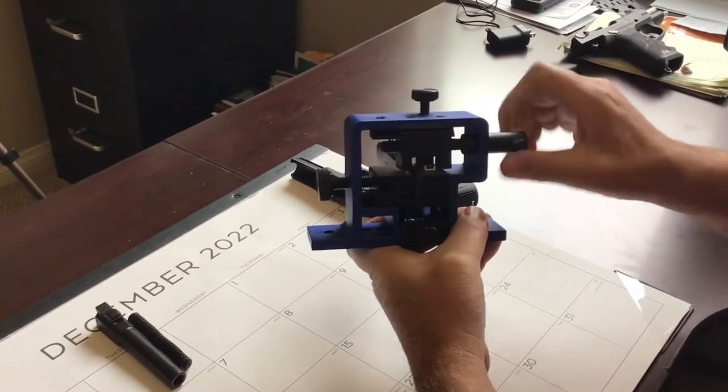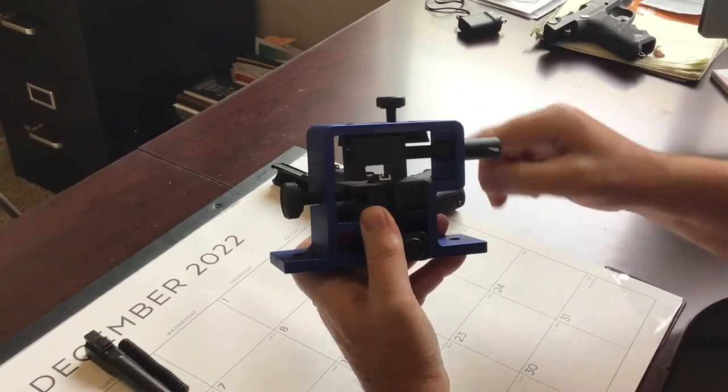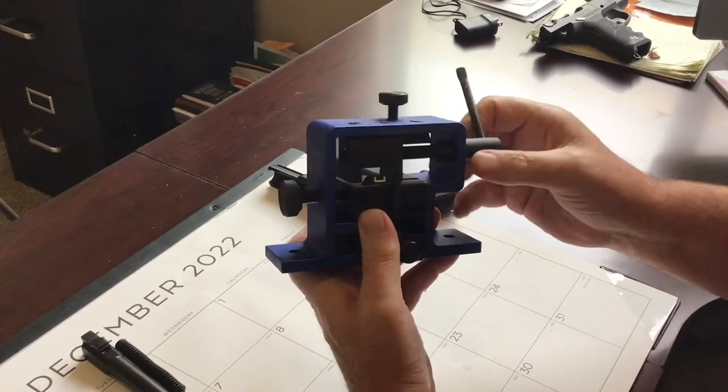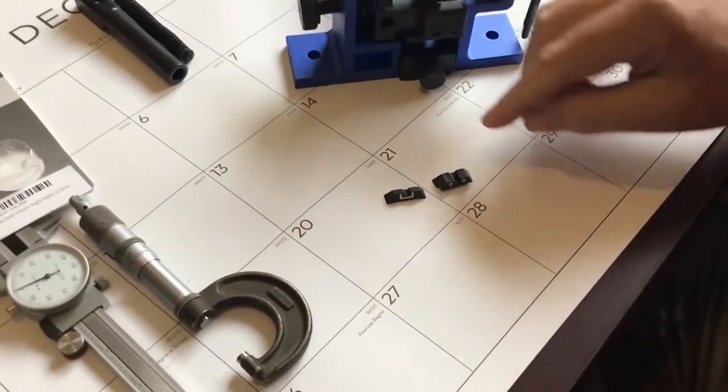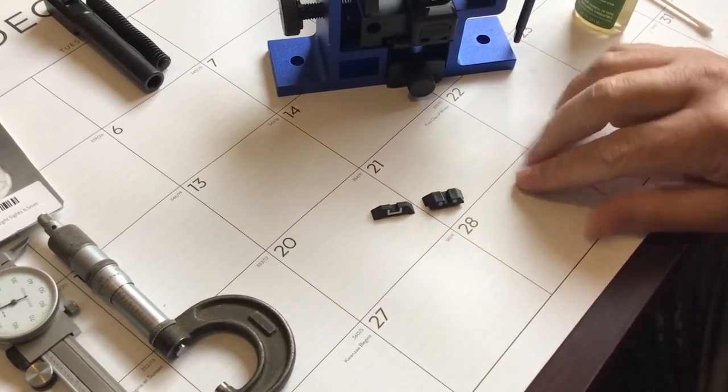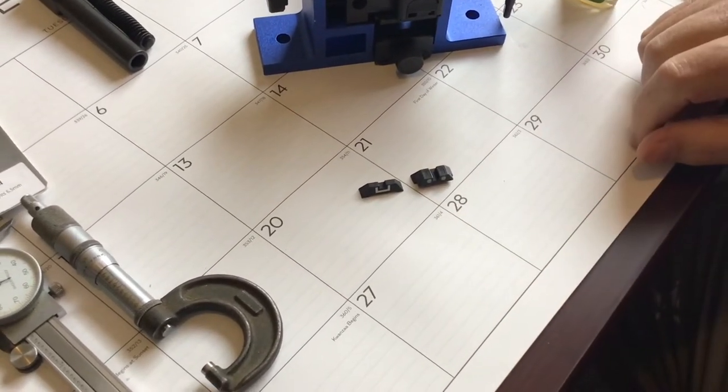Okay, you can see the difference here between the factory sight that we took out and the night sights that we're putting in. They're a little bit thicker but overall they're very close in dimension, and that's one of the reasons that I like using factory Glock parts when I'm doing upgrades to my personal weapons.